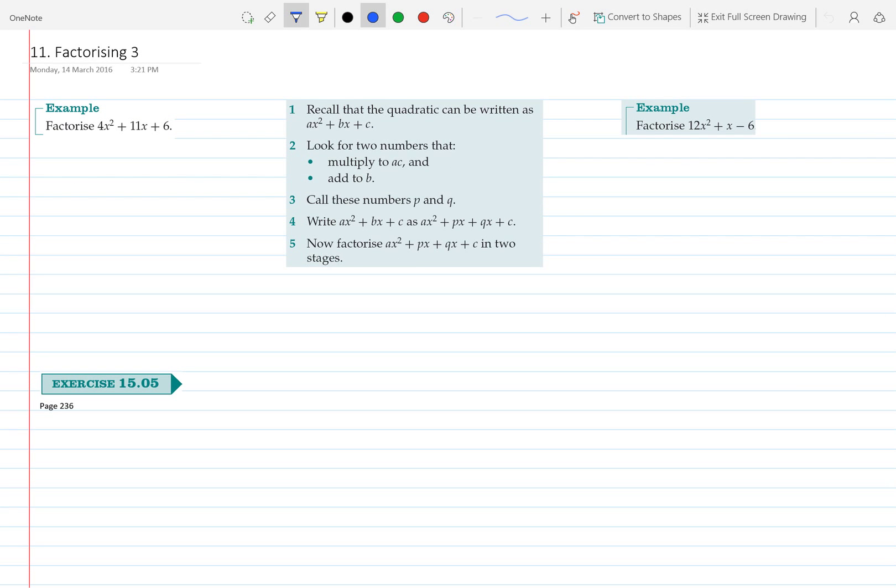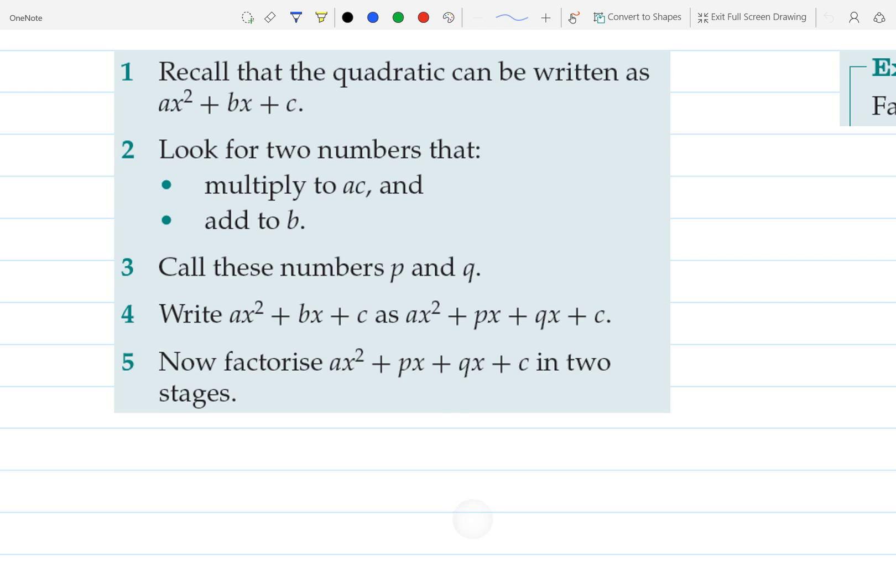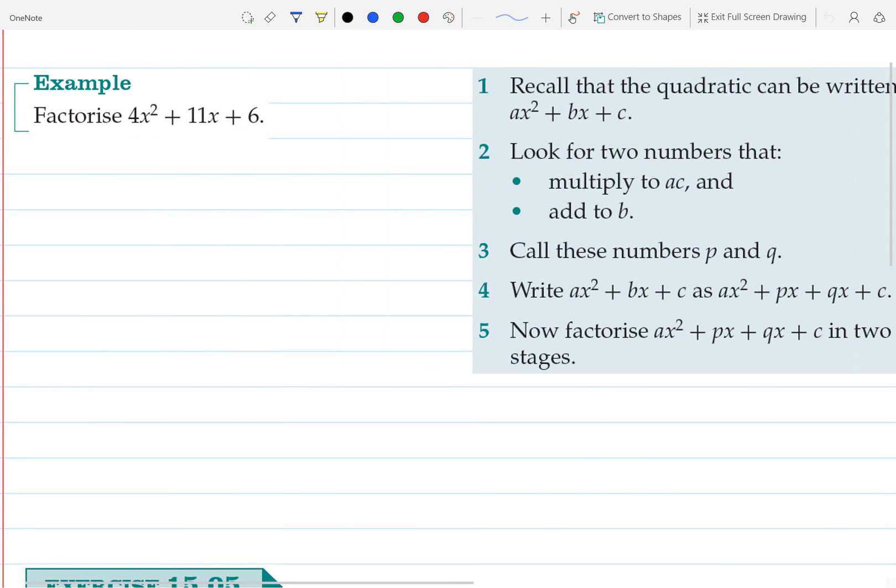Hello everyone, in this video we're looking at factorising more difficult quadratics. You'll see here in the middle I've got some instructions that we can follow for these particular quadratic equations. We use this method when we have something like this where we've got a non-1 coefficient in front and it's not immediately obvious that we can factorise it any other way. You can see that 4 does not go into 11 or 6 and so we can't factorise it in that method.